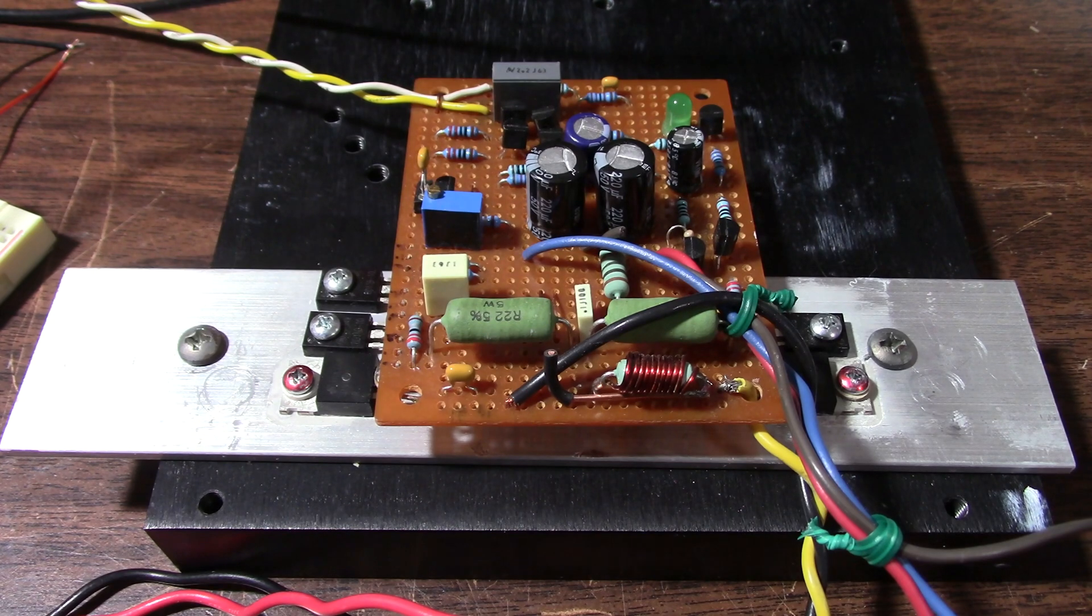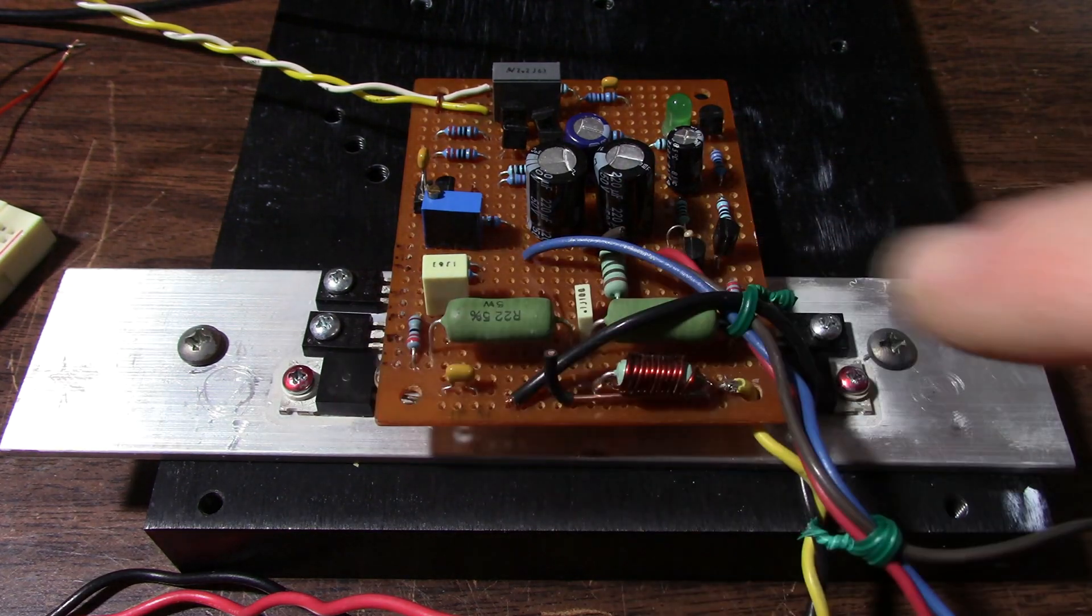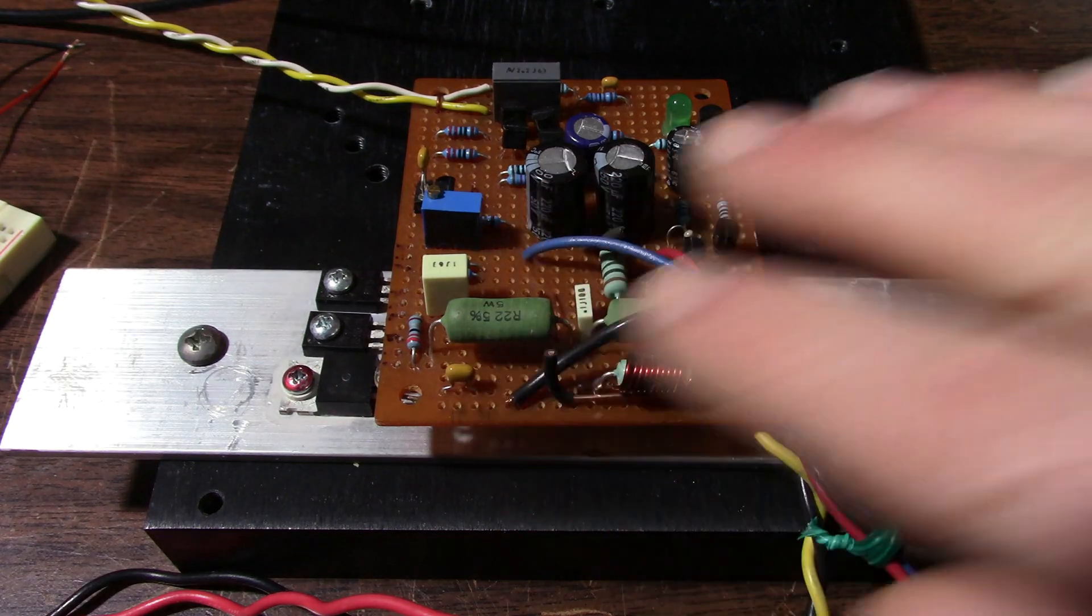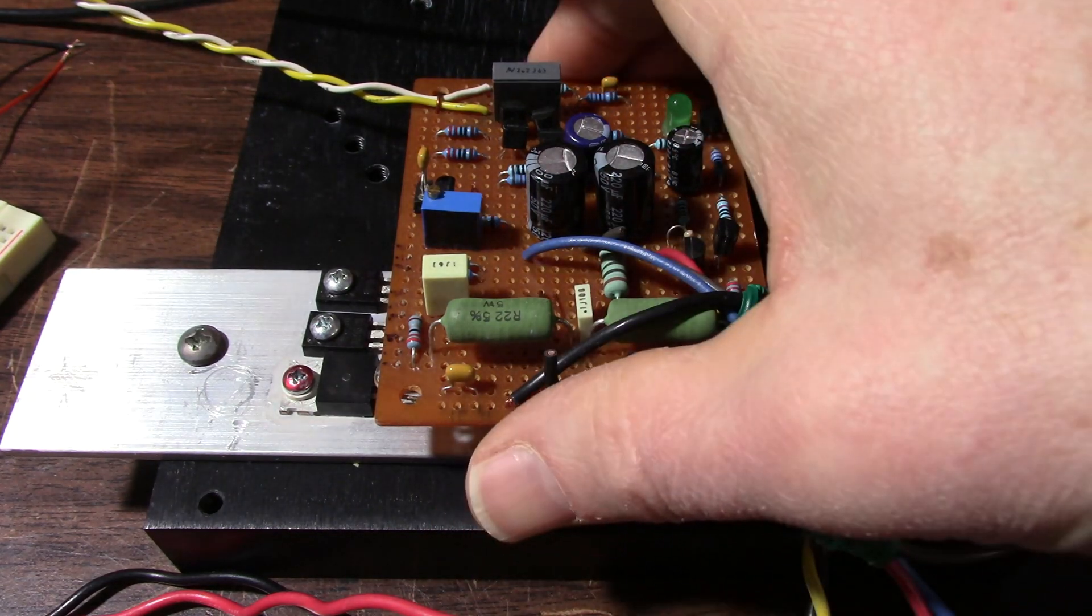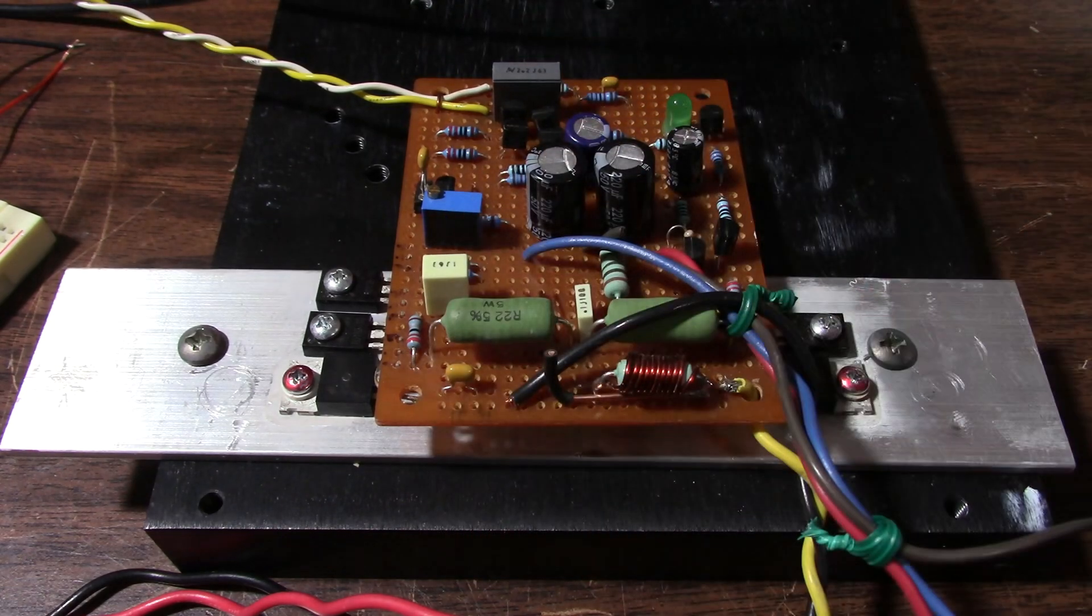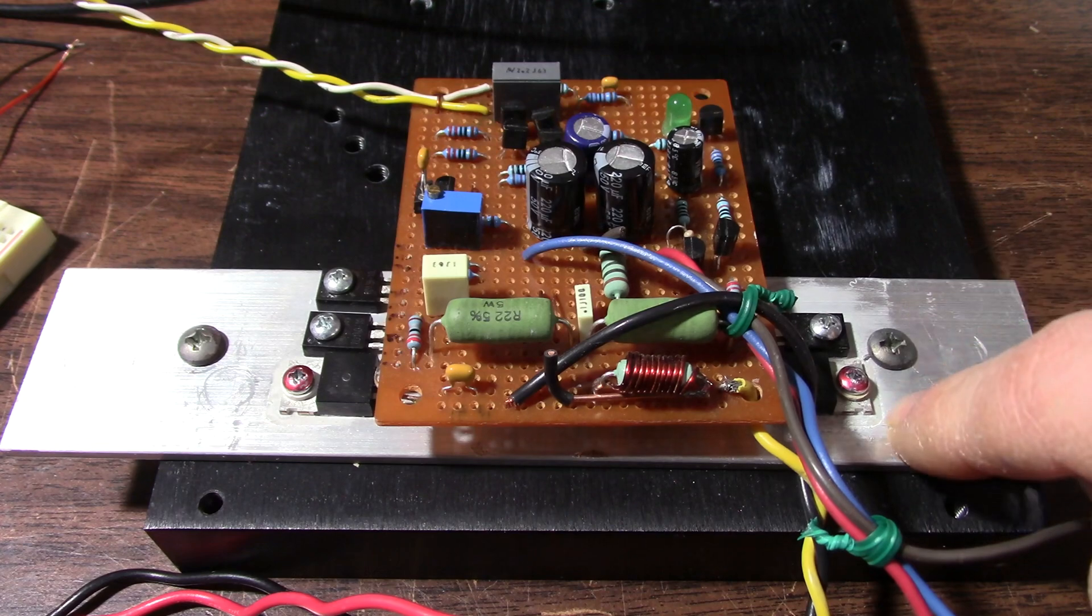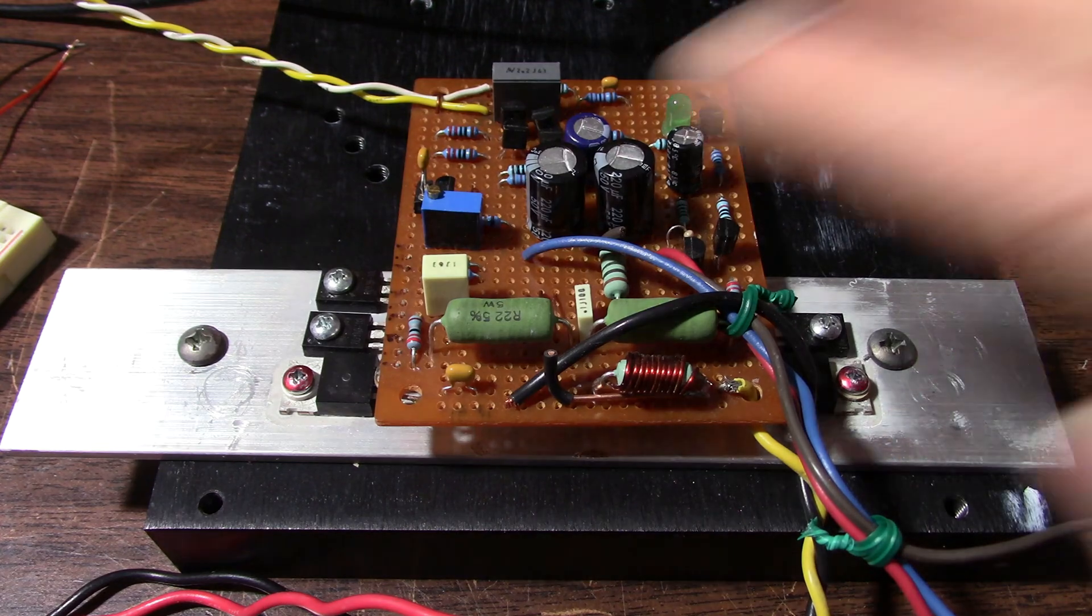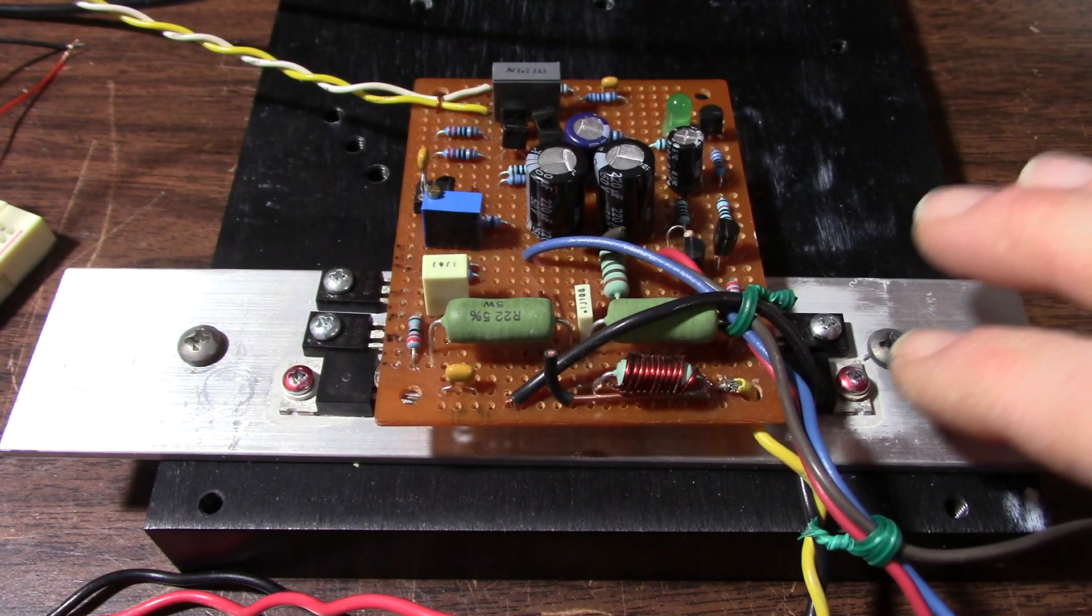Okay so what I want to do today on the bench is test the power dissipation versus the actual power output. You've probably heard that with a class AB or class B push-pull type amp, the dissipated power is actually less at full output power. So what I want to do is take some measurements and kind of explain what's going on.